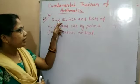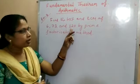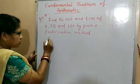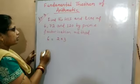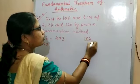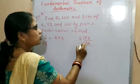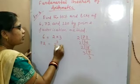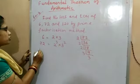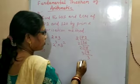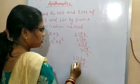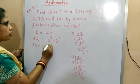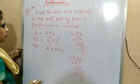Our third example: find the HCF and LCM of 6, 72 and 120 by the prime factorization method. Here we have three numbers, so we factorize all. First, 6 = 2 × 3. Next, 72 = 2³ × 3². Then factorize 120: 120 ÷ 2 = 60, ÷ 2 = 30, ÷ 2 = 15, ÷ 3 = 5. So 120 = 2³ × 3 × 5.